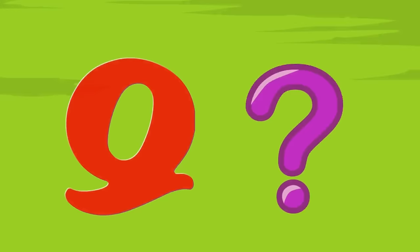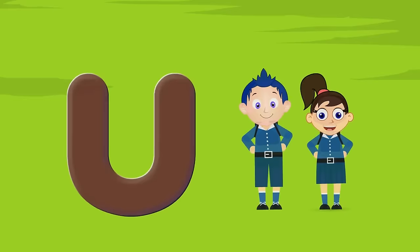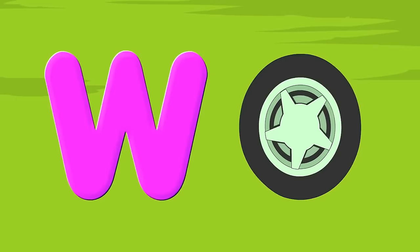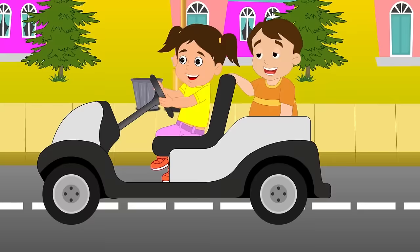Q for question mark, c-c-question mark. R for rabbit, r-r-rabbit. S for sun, s-s-sun. T for teddy bear, t-t-t-teddy bear. U for uniform, u-u-u-uniform. V for violin, v-v-violet. W for wheel, w-w-wheel. X for the rocks, z-z-z-rocks. Y for yam, y-y-yam. Z for zip, z-z-zip. This is a phonic song, come sing with me.